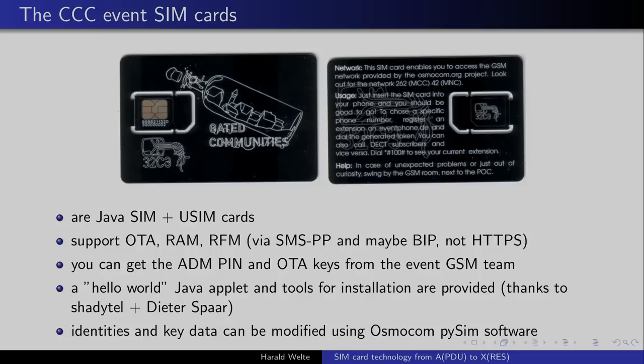As a final slide: the CCC event SIM cards around here, if you use the cellular networks, are Java SIM and USIM cards. They support over-the-air updates — specifically remote application management and remote file management at least via SMS-PP. They don't support HTTPS yet. If you're interested in playing with any of that and writing your own Java applets — there's even a hello world one around for several years as a starting point — you can get the keys for your specific card from the GSM team and play with all of this in a way that normally only the operator can do with the card.